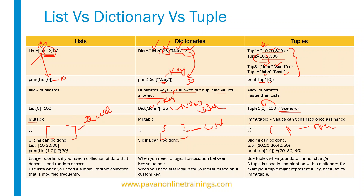Now, slicing. Slicing is possible in lists — we can extract values by specifying a starting index and ending index. When I say list[1:2], it starts from index 1 and goes up to index 2. In dictionaries, we cannot do slicing because dictionaries do not maintain any proper order. In tuples, we can still do slicing just like a list — for example, tuple[1:4] will return values from index 1 up to index 4.